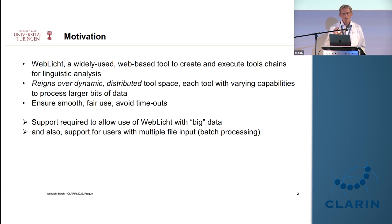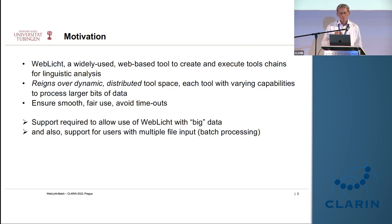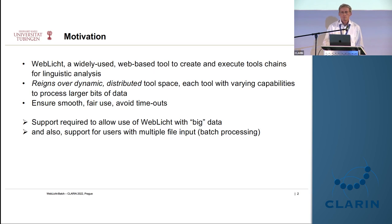One problem noticed when feeding WebLicht with larger text files is that tool chains sometimes fail to execute — they just stop — either because of input size or content. We want to allow users to input larger files without risking execution problems. There was also a feature request: users wanted to be able to process a collection of text files — say a dozen English plain text files — with the same chain at once, not just one file at a time.